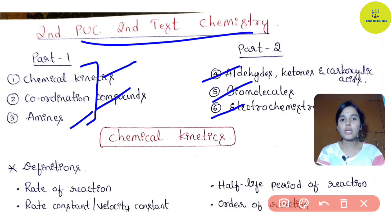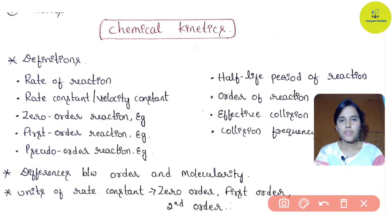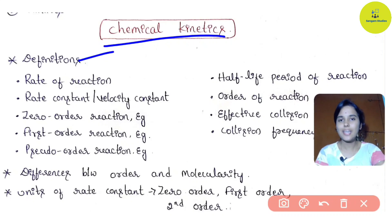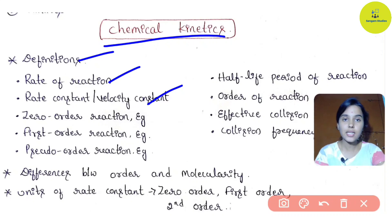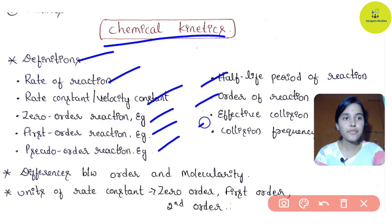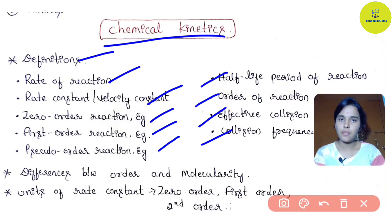First chapter: Chemical Kinetics. The most important topics you will study for the second test. First, practice these definitions: rate of reaction, rate constant or velocity constant, zero order reaction, first order reaction, pseudo order reaction - these are two-mark questions. Half-life period of reaction, order of reaction, effective collision, collision frequency - these are one-mark chances in the second test.